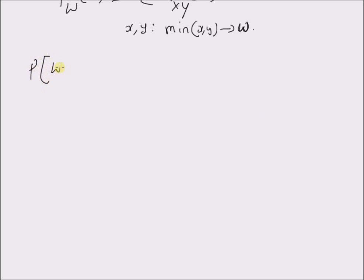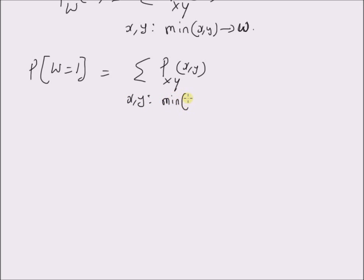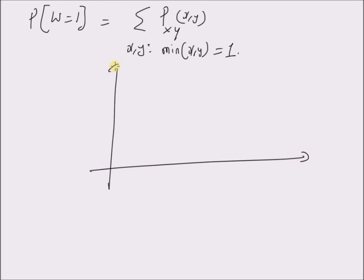For example, for the value of W equal to 1, the probability mass function at W=1 is given by the sum of the joint probability mass function for all values of (x, y) for which the minimum of x and y is equal to 1. By looking at the graphical representation of the joint PMF, we can clearly see that for values of x from 1 to 10 and values of y from 1 to 10, the value of W=1 is given by x from 1 to 10 and y from 1 to 10.